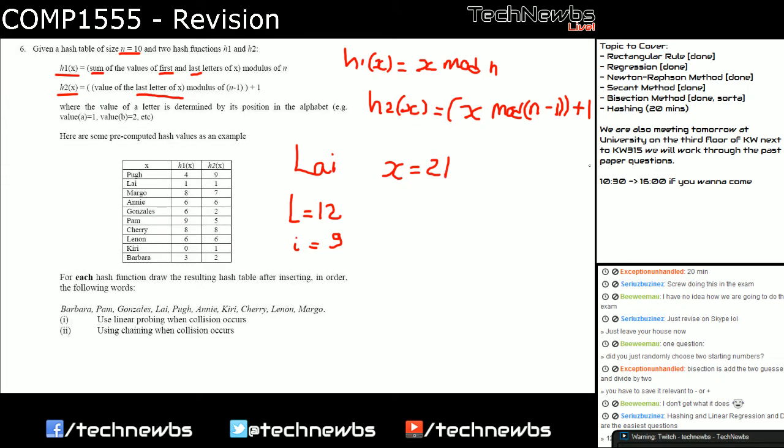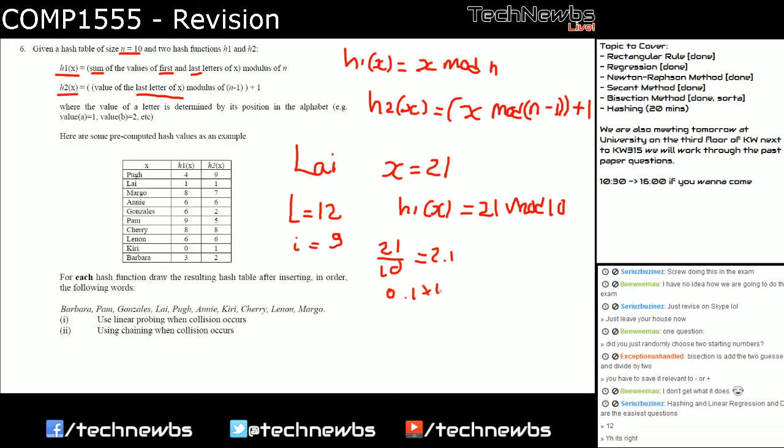So for h1, h1(x) will be 21 mod 10. And as we did before, 21 over 10 is 2.1. Now you do 0.1 times 10. You remove the whole number and then you just use the decimal and times the decimal by the number that is modding to get the value, and you get 1. So that would be 1.